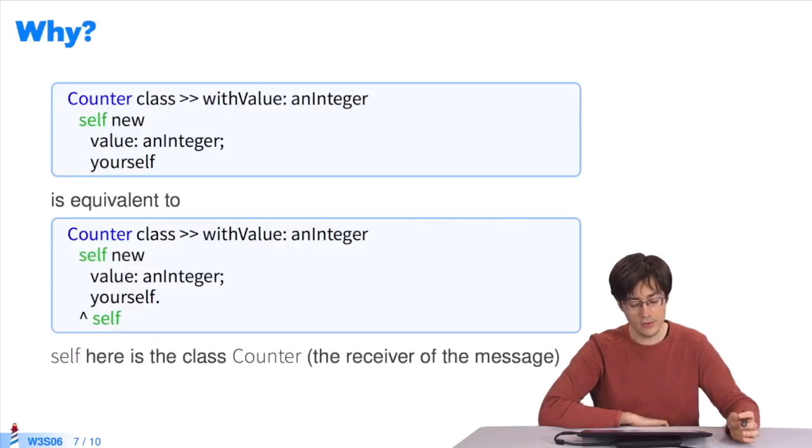The problem is that by default, all methods return self. So if I don't specify the value to return, the method will return self. So the code up here is equivalent to the code down there. In this case, self is the class counter. So the method returns the class itself, not the instance created just above.